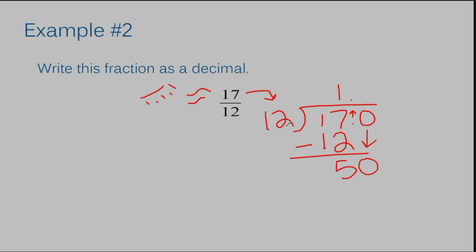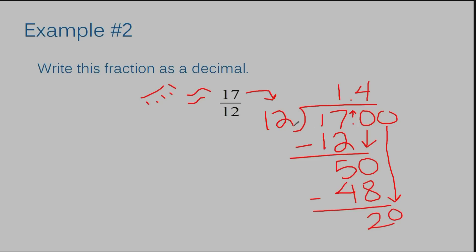Now I can bring down my zero and ask myself how many times does twelve go into fifty — it goes in four times, and that's forty-eight. I subtract and get two. I can add another zero and bring it down. How many times does twelve go into twenty? One time — it's twelve. I subtract, get an eight, add another zero. How many times does twelve go into eighty? The answer is six. And we're starting to get kind of long.